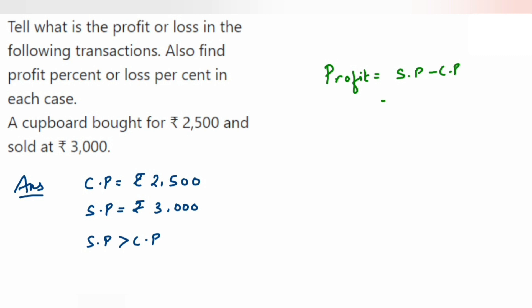Selling price is 3,000, so rupees 3,000 minus rupees 2,500. Now when we subtract it we will get rupees 500.